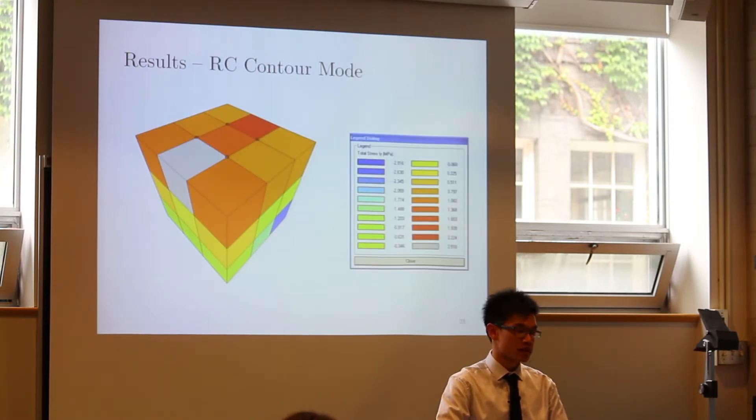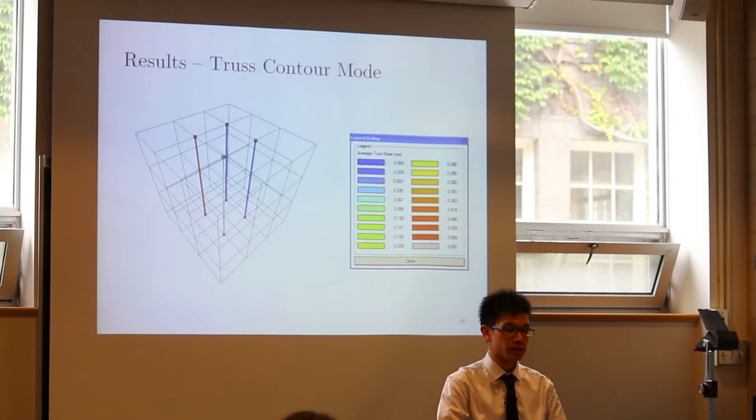The color contour mode represents the most general purpose result mode for displaying numerical results on a global basis. Depending on the context of the selected variable or parameter, nodes or elements will be recolored in a gradient which corresponds to values represented in the legend pop-up dialog, as shown here, with a reinforced concrete related variable, and here with a truss element related variable.